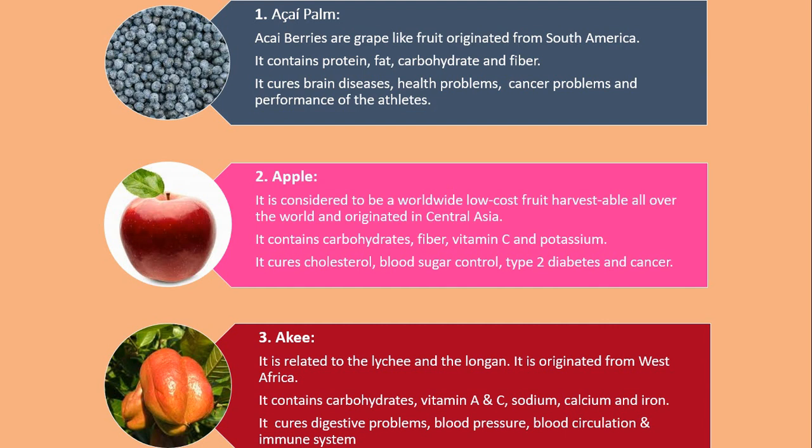Number 3. Ackee. It is related to the lychee and the longan. It is originated from West Africa. It contains carbohydrates, vitamin A and C, sodium, calcium and iron. It cures digestive problems, blood pressure, blood circulation and immune system.